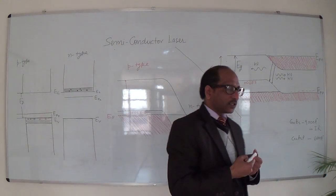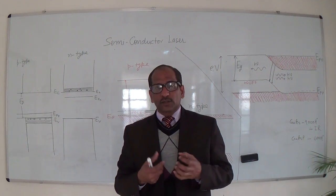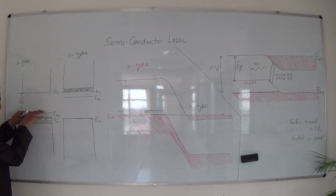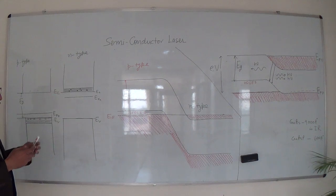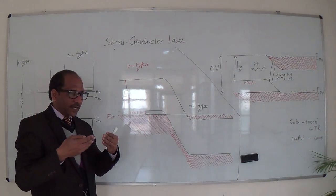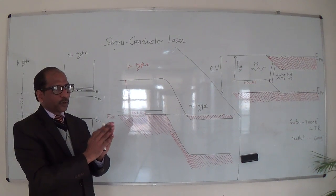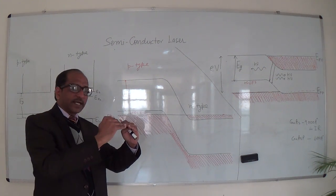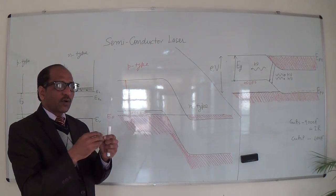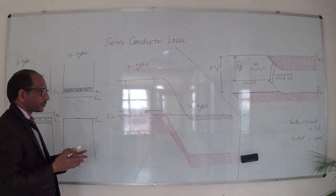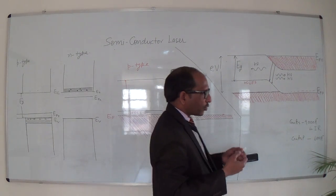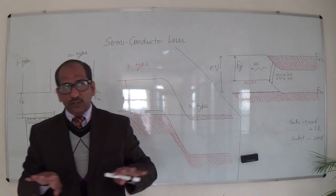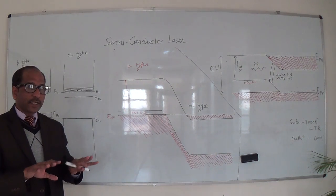What happens when we join the P and N junction? The Fermi energy level in P-type is above and in N-type it is below. When we join them, electrons start to flow towards the P side and holes — which are majority charge carriers in P-type — move towards the N side. Near the junction, electron-hole recombination takes place, and after some time we observe no more flow of electrons or holes. That situation is known as the equilibrium condition.